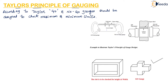Here you can see that there is a go snap gauge and a no-go snap gauge. The tolerance is measured and they have given the upper limit and lower limit for the tolerance. In this figure there is also a lower limit and upper limit for tolerance in the shaft, and there are no-go plug gauge and go plug gauge attached here.